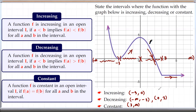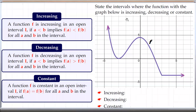So these are the intervals where the function is increasing, decreasing, or constant. If you are given a graph of a function, to decide where it's decreasing, increasing, or constant, all you need to look at is where it's sloping downward, where it's sloping upward, and where it's horizontal. Let's look at the next example.